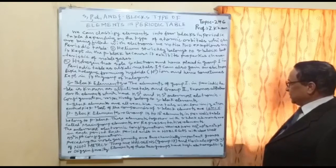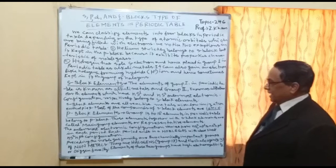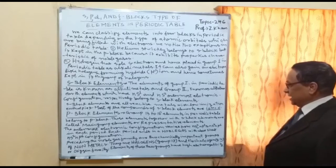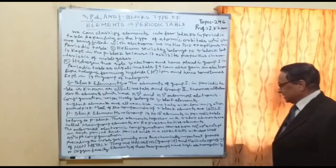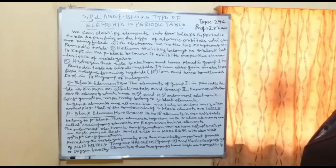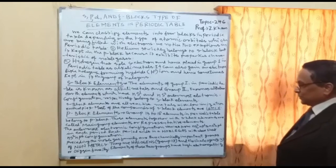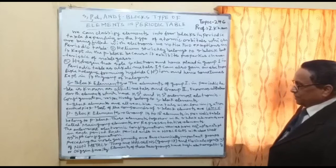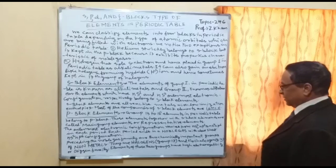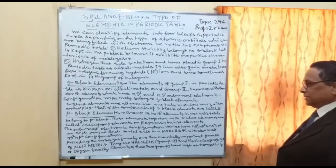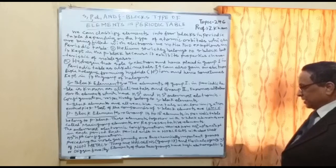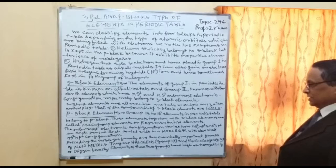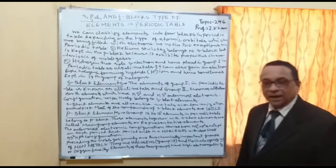Groups 13 to 18 elements in the periodic table belong to P block elements. These elements, together with S block elements, are called main group elements or representative elements. The outermost electronic configuration varies from NS2P1 to NS2P6. Each period ends in a noble gas with the closed-shell NS2P6 configuration. Preceding the noble gas family are two chemically important groups of non-metals: the halogens (group 17) and the chalcogens (group 16, the oxygen family). Elements of these two groups have high electronegativity.